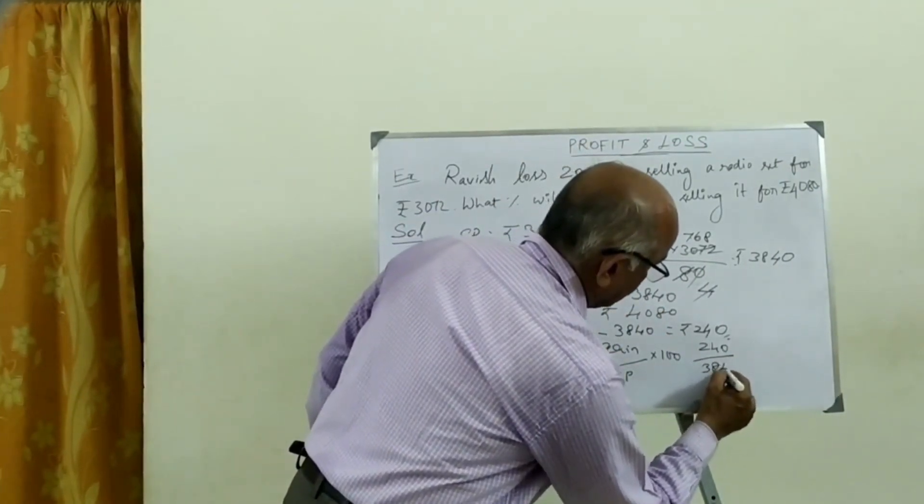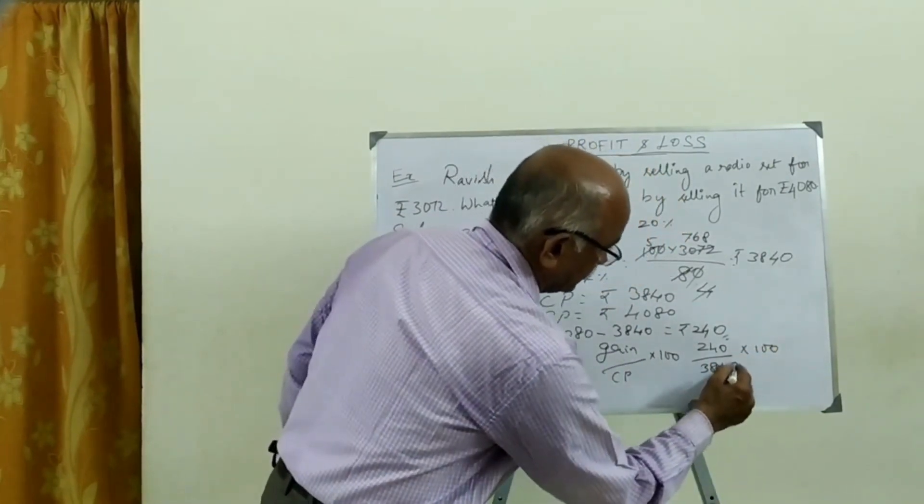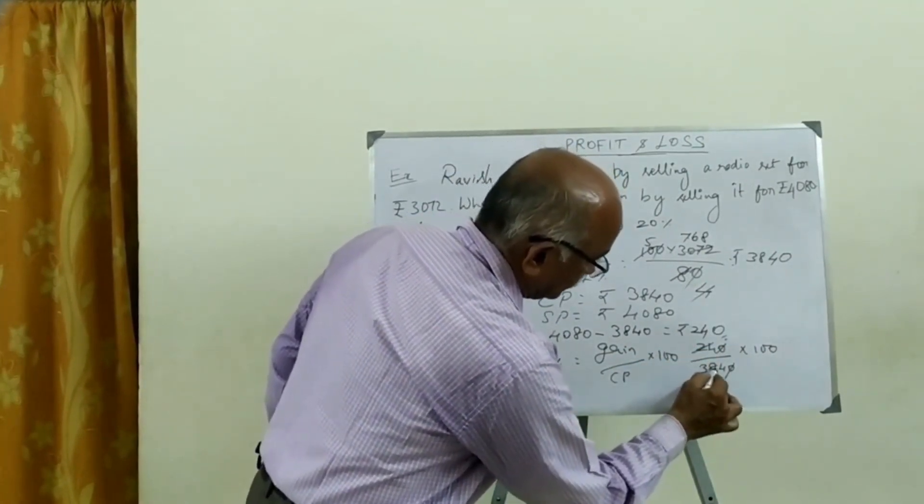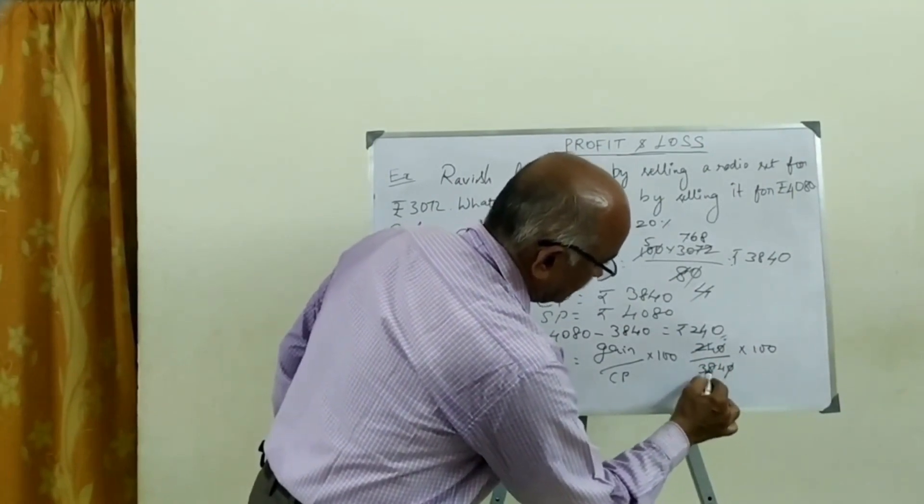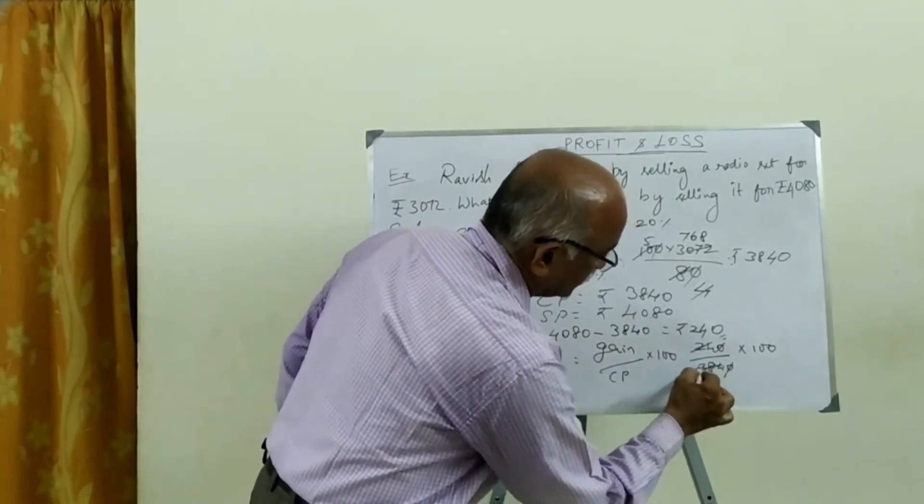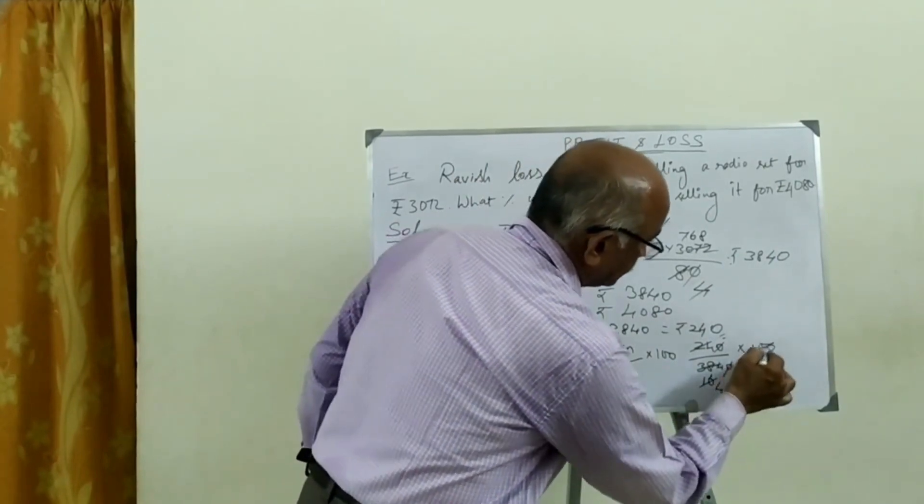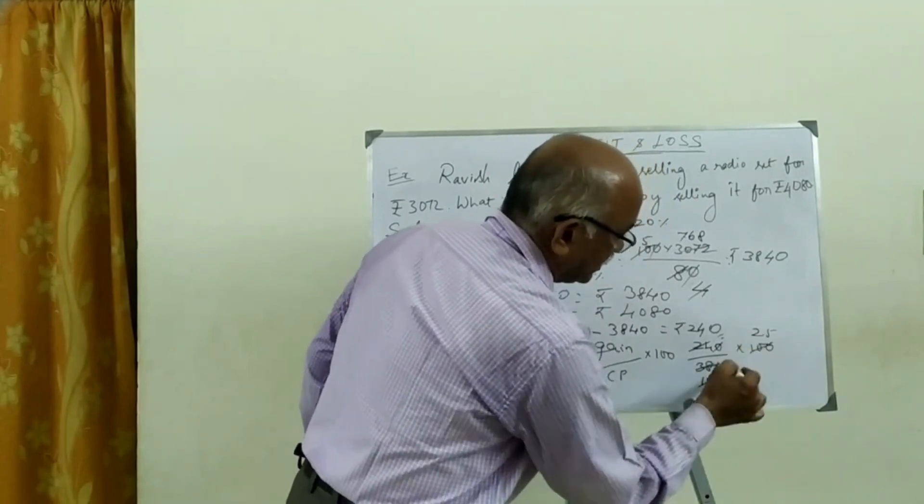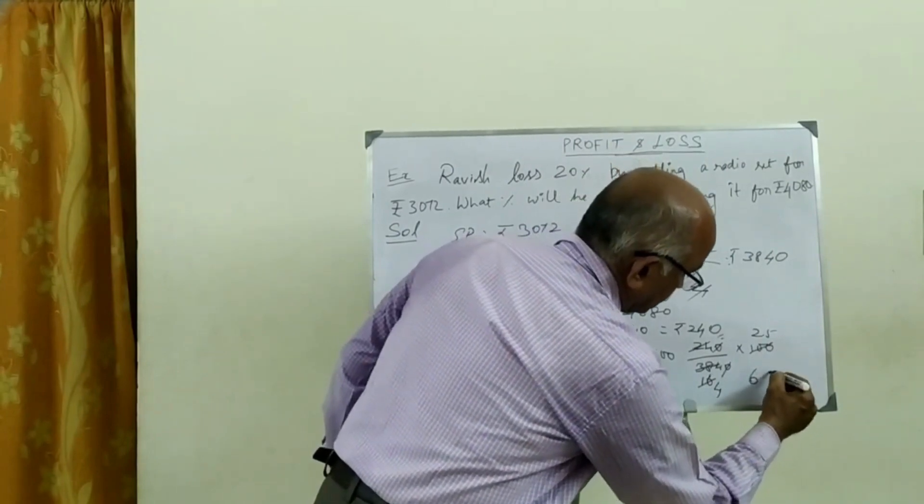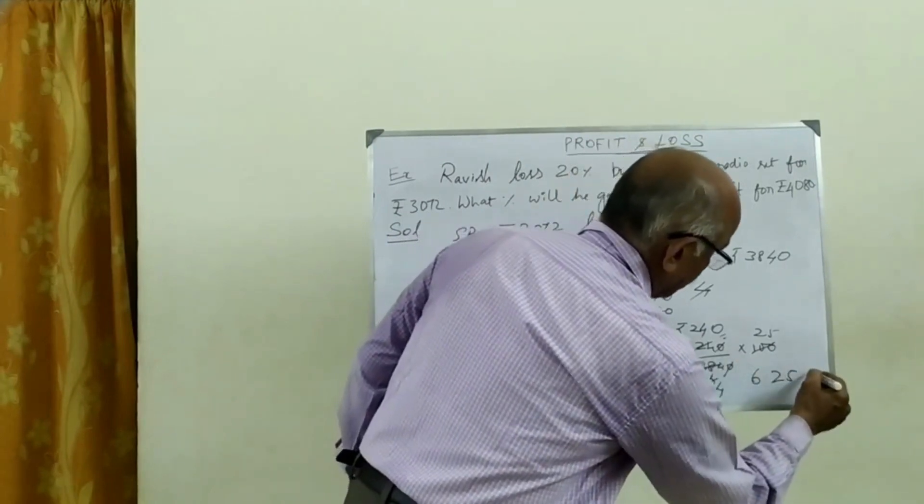CP is equal to 3840. The gain percentage is 6.25 percentage.